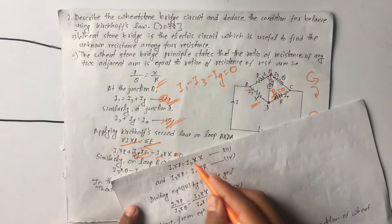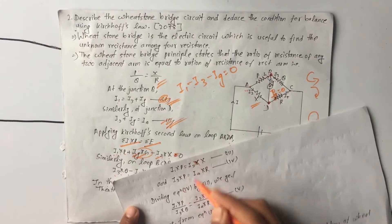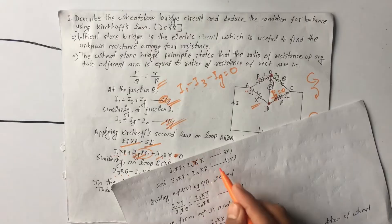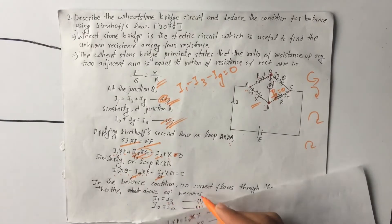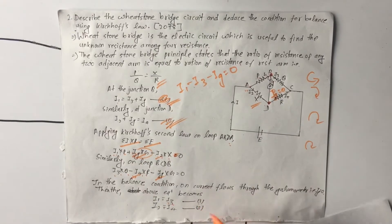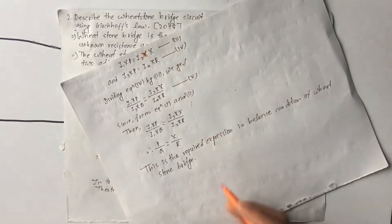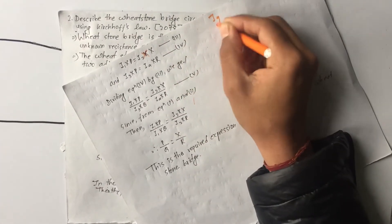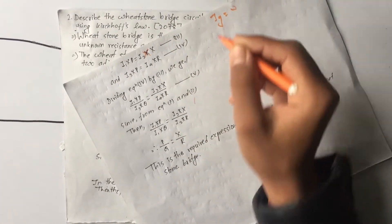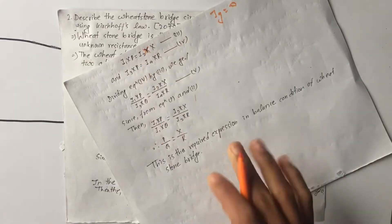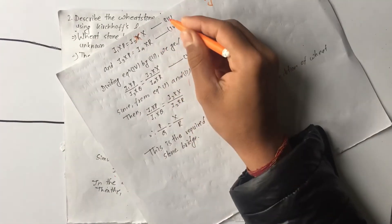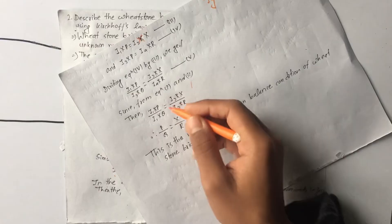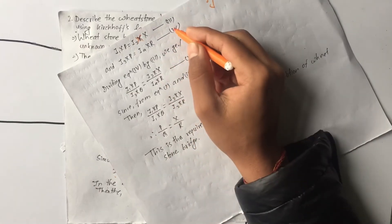So I1 into P is equal to I2 into X — equation 1. And I3 into Q is equal to I4 into R — equation 3. With iG equal to zero, I1 equals I3 and I2 equals I4. Dividing equation 1 by equation 3 or 4: